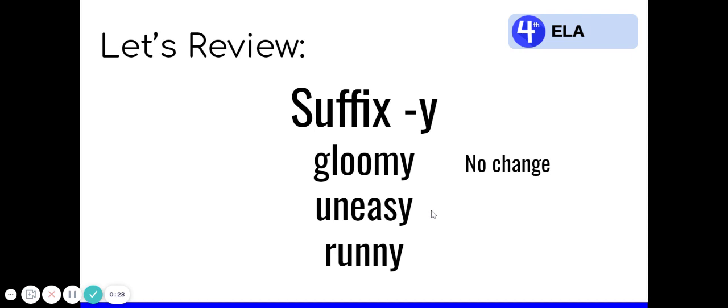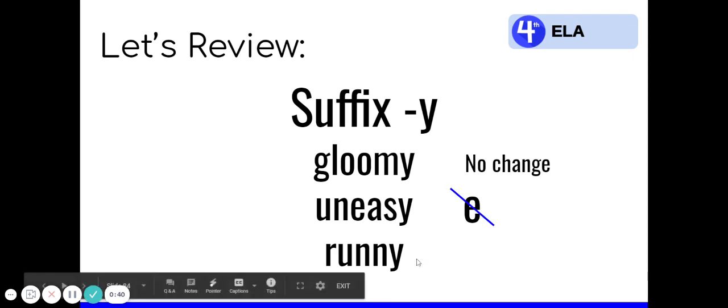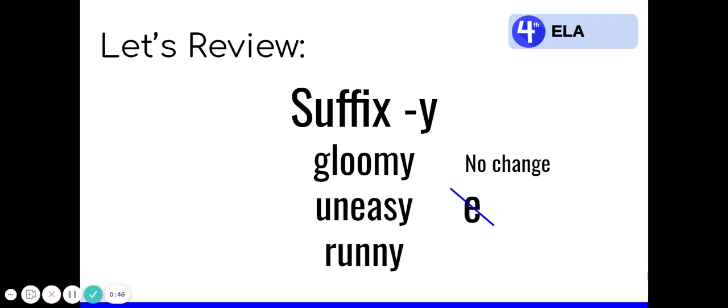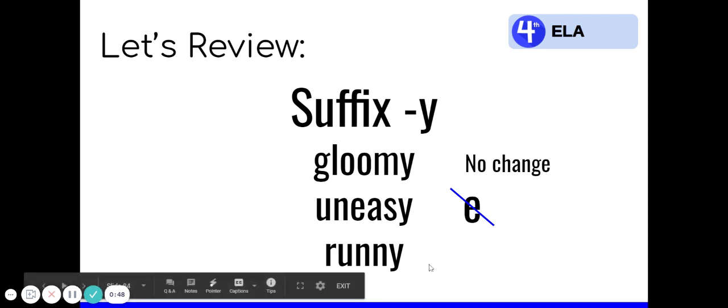Uneasy. The base word is unease. The word unease has a silent e that is dropped when they add the y. This is our e-drop rule. And finally, runny. The base word is run. Because this is a one-syllable word and a short vowel, we need to double the consonant n before adding the y. So this is our doubling rule.